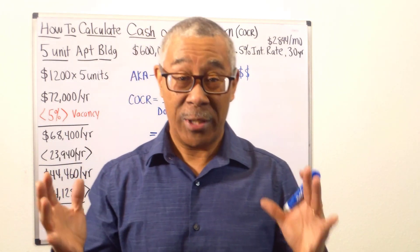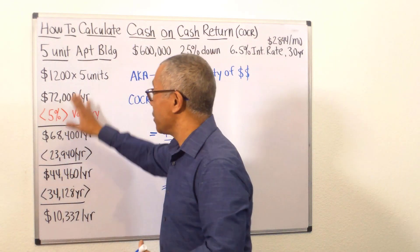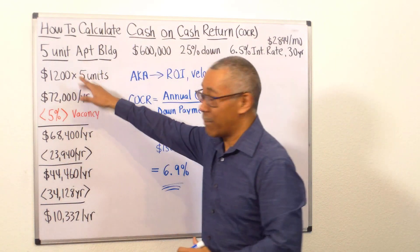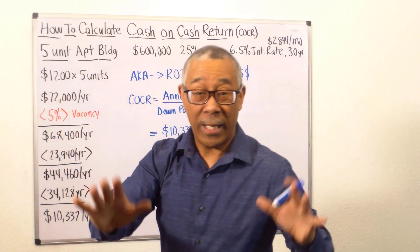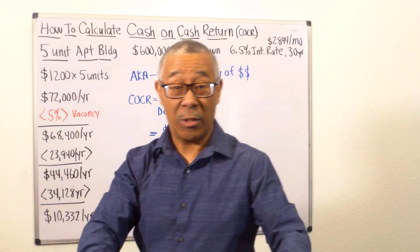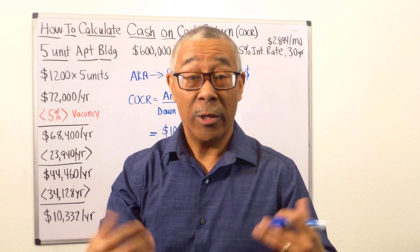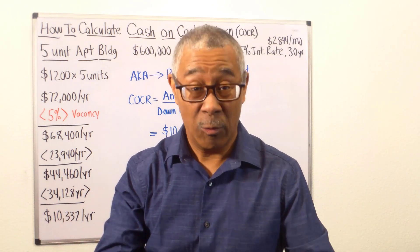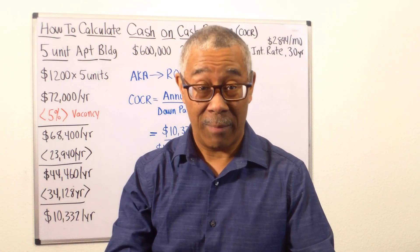So now let's break it down with an example. When you calculate cash on cash return, what you have to figure out are two things: your annual cash flow and your down payment.